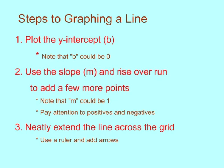If your slope is 1 half, for example, you're going to rise 1, that's the numerator, run 2 to the right, that's the denominator, and add a few more points that way. If your slope is negative, you're actually going to be dropping instead of rising.